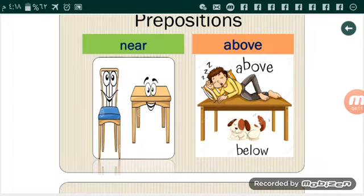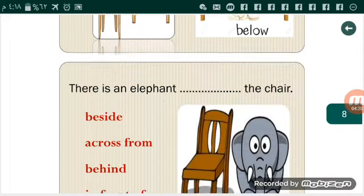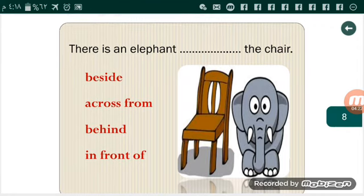There is a chair near the table. There is a boy above the table. Now, your turn: There is an elephant, space, the chair. Excellent, beside.